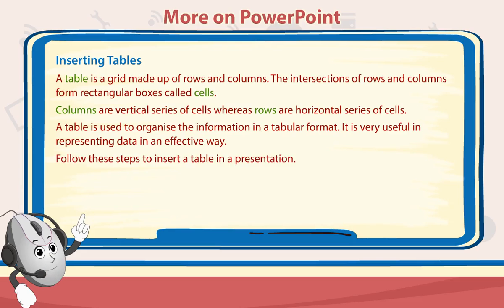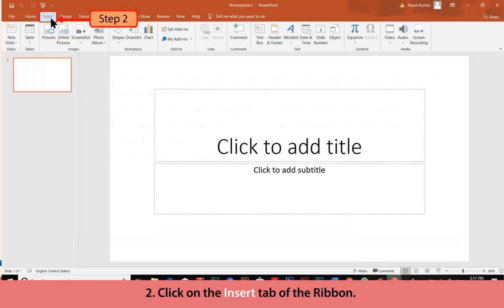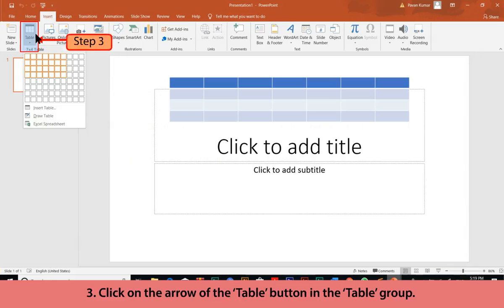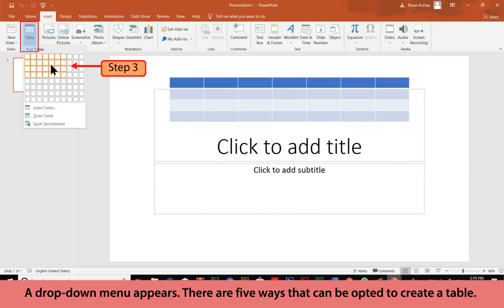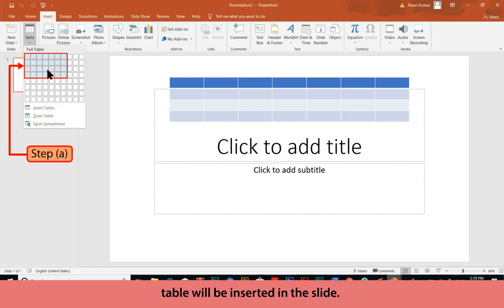Follow these steps to insert a table in a presentation. First, select the slide in which the table is to be inserted. Click on the Insert tab of the ribbon. Click on the arrow of the Table button in the Table group — a drop-down menu appears. There are 5 ways to create a table. Method A: Highlight the rows and columns of the table in the drop-down grid and a table will be inserted in the slide.